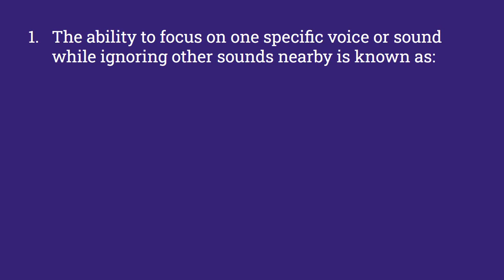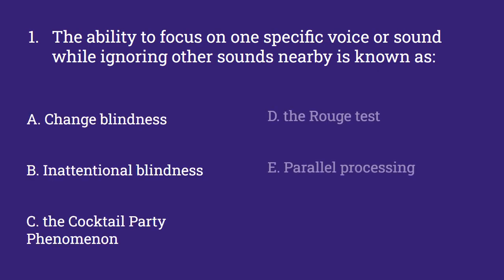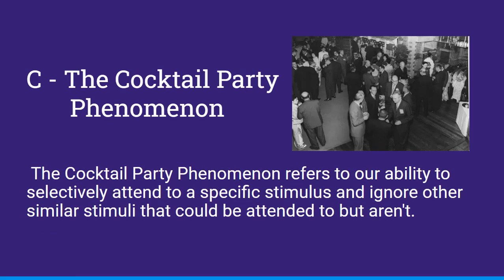The ability to focus on one specific voice or sound while ignoring other sounds nearby is known as: change blindness, inattentional blindness, the cocktail party phenomenon, the rouge test, or parallel processing. And this is C, the cocktail party phenomenon. The cocktail party phenomenon refers to our ability to selectively attend to a specific stimulus and ignore other similar stimuli that could be attended to but aren't.